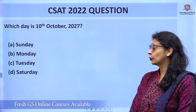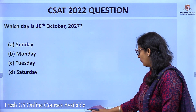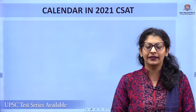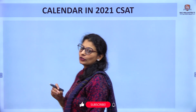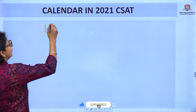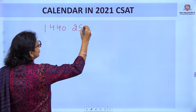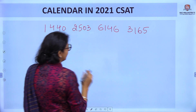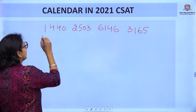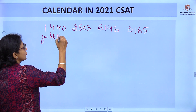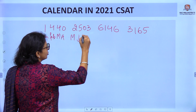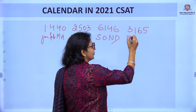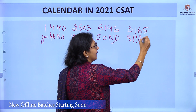To find the day for a given date, we use specific codes that you have to learn. The codes are: 1440 2503 6146 3165. These correspond to the months — January, February, March, April, May, June, July, August, September, October, November, December. And these are the century codes: 18th century, 19th, 20th, 21st.